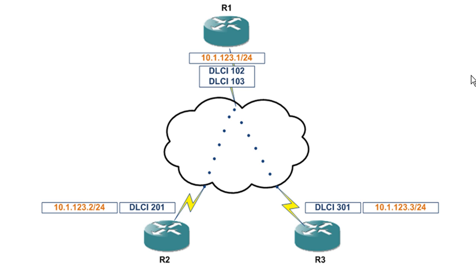I've heard this from Scott Morris, who's a famous CCIE instructor — I like his analogy the best. Basically, don't tell a joke to the guy that just told you the joke. So in this case, let's imagine there's a network down here on R3 and you're running a routing protocol. R3 advertises that — let's call it network X. R3 says to R1: if you need to get to network X, come through me.